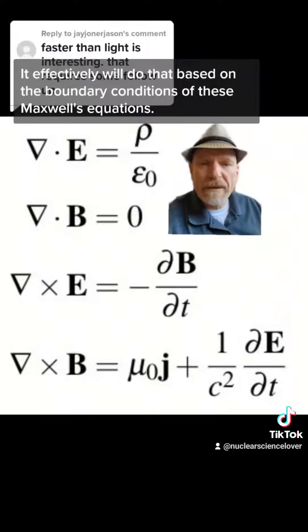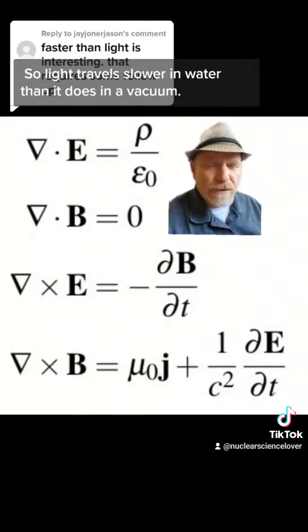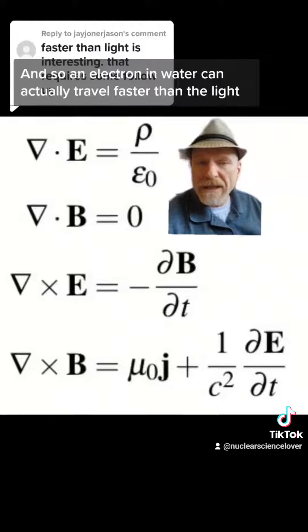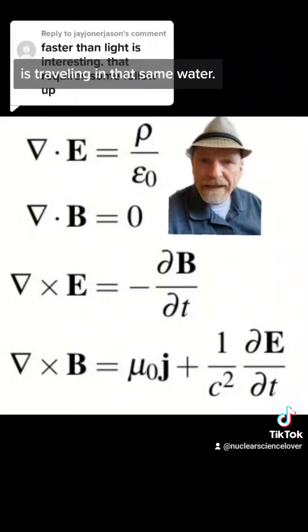It effectively will do that based on the boundary conditions of these Maxwell's equations. So light travels slower in water than it does in a vacuum. An electron in water can actually travel faster than the light is traveling in that same water.